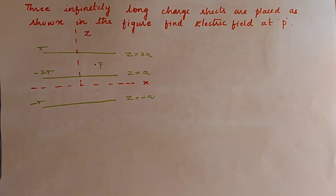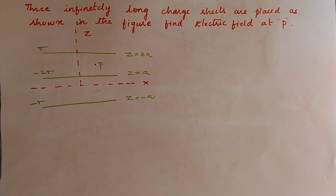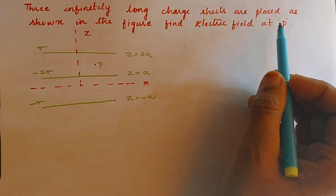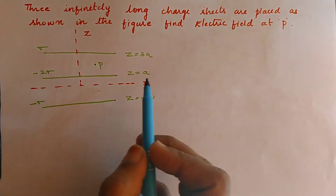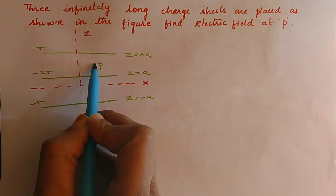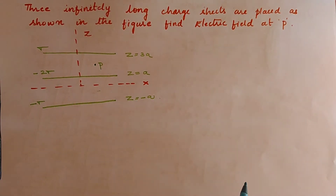In today's lecture we will study numericals related to continuous charge distributions. In the first question, there are three infinite long charge sheets as shown in the figure, and we need to find the electric field at a particular point.